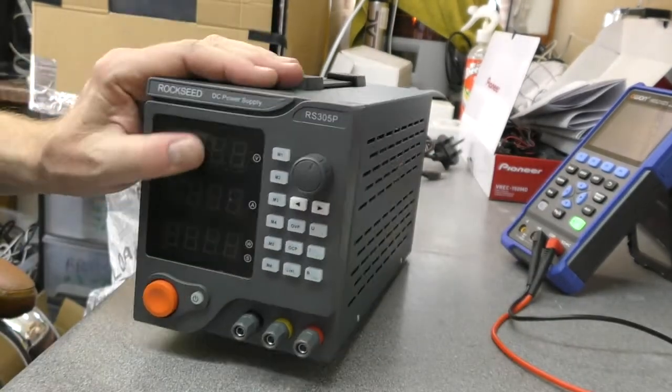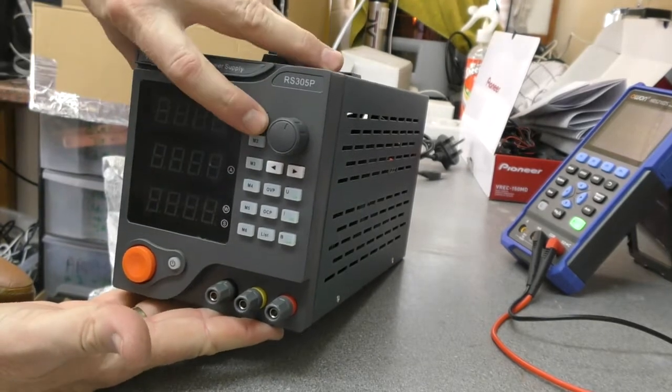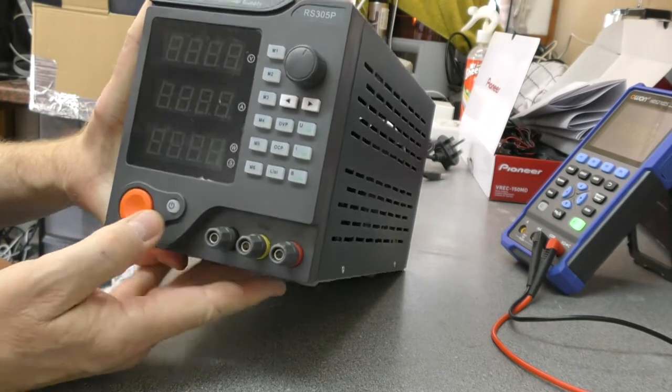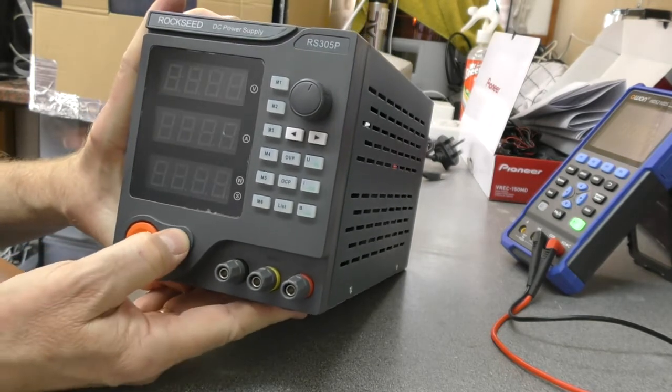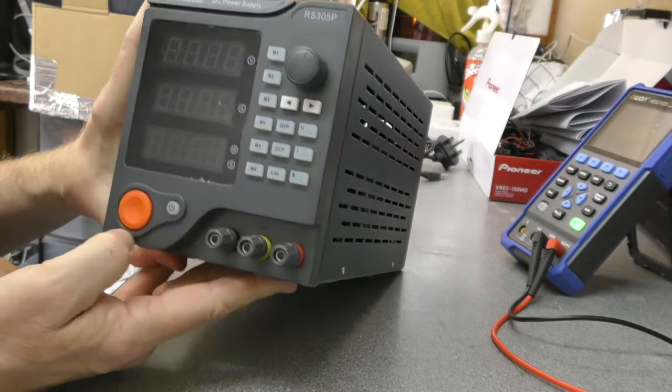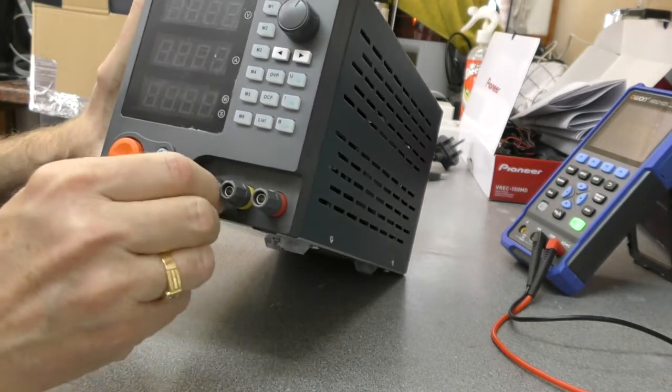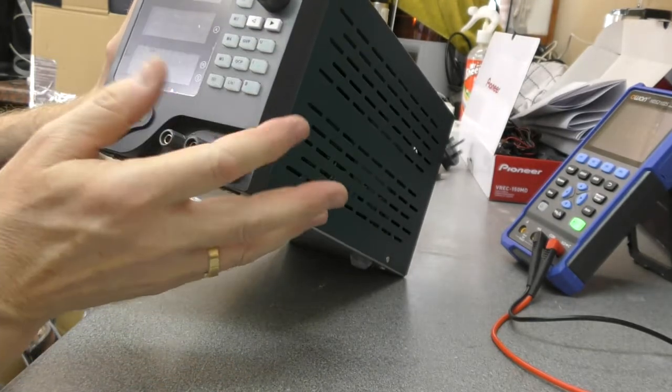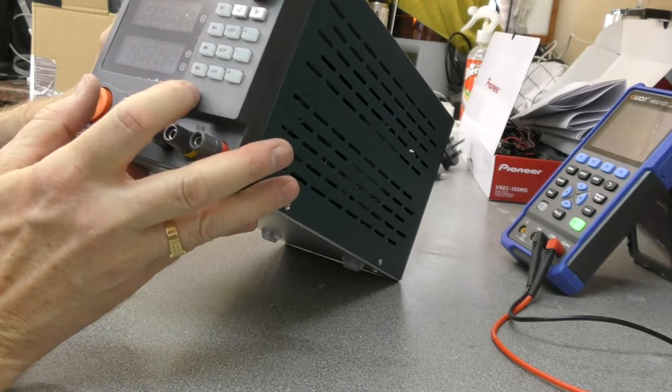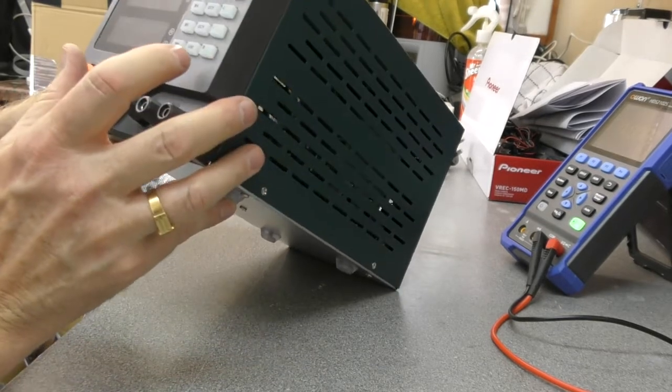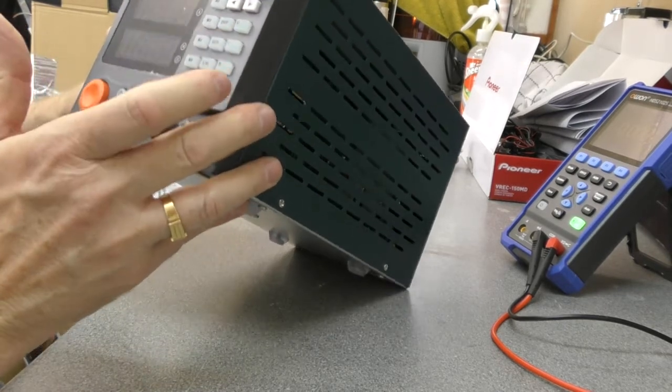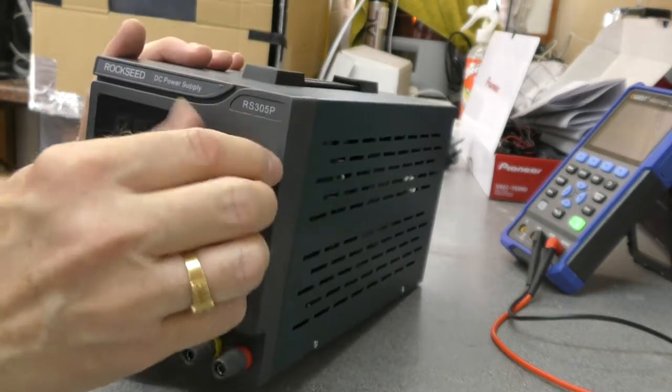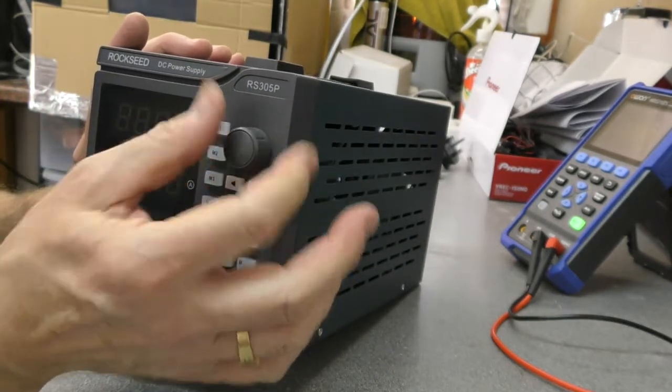Anyway on the front we have, so we've got six memory buttons. Just push. We have a pretty large on off button. Quite possibly a soft standby button. The ground earth and live. We've got overvolt protection settings over current. List. I'm not sure what list is for. And then you've got constant voltage constant current and lock and left and right. And the rotary encoder.